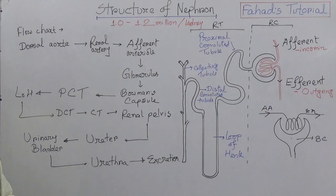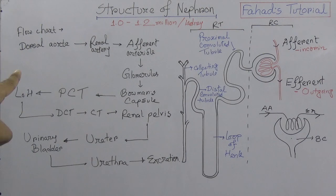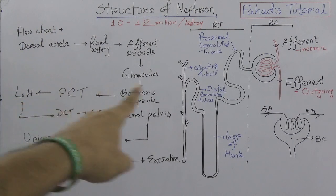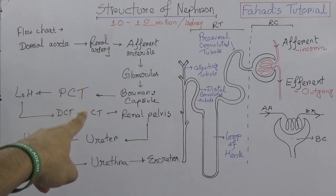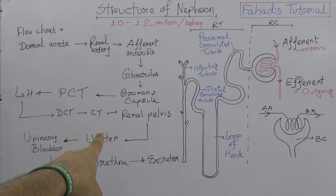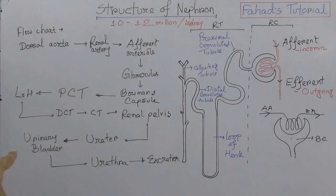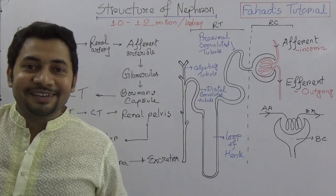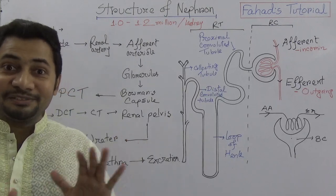So this is the flowchart of the kidneys inside and outside. It starts from the dorsal aorta, to the renal artery, to the afferent arteriole, then glomerulus, Bowman's capsule, then the renal tubule, to the renal pelvis, to the outside of the kidney which is the ureter, then urinary bladder, urethra, and excretion. This is the complete flowchart of the inside and outside of the kidneys.